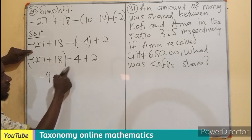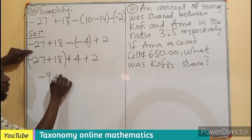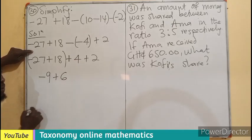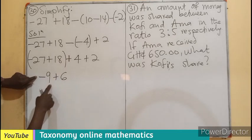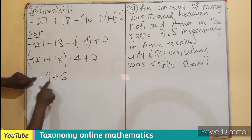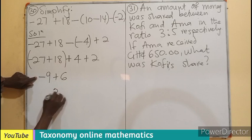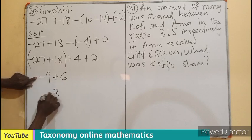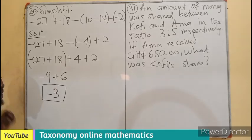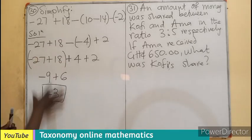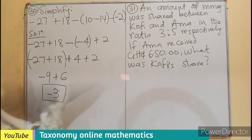Then plus — I know this will already give you 6. The same thing is happening here: adding integers of different sign, subtract. This minus this will give you 3. The sign of the bigger number is positive. So this is going to be the answer when we simplify this.